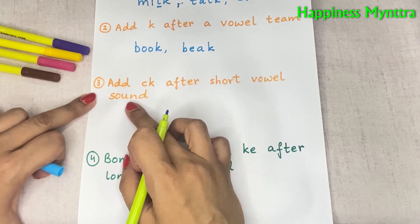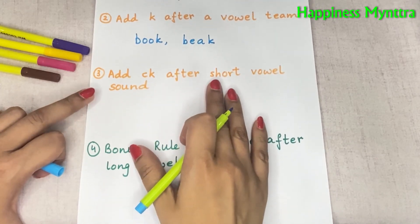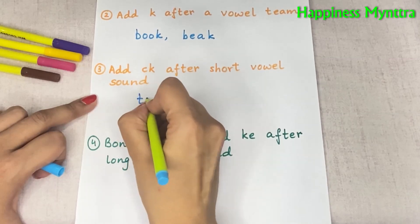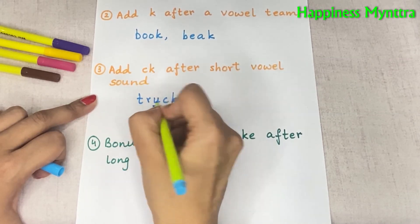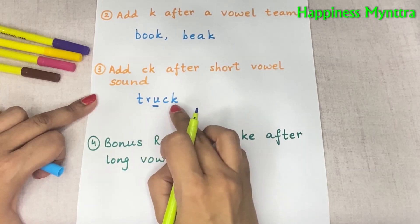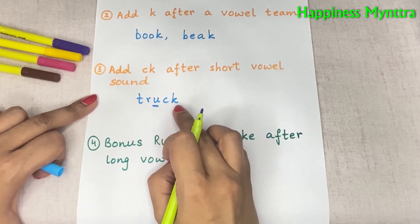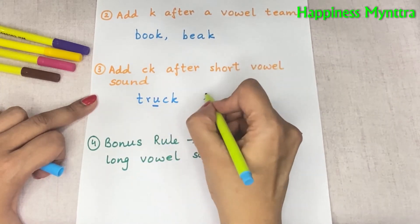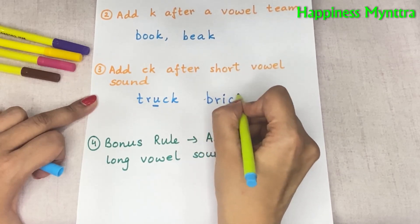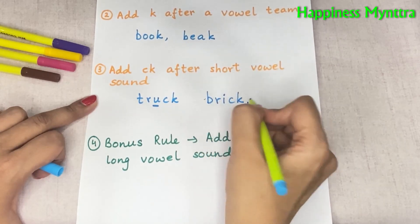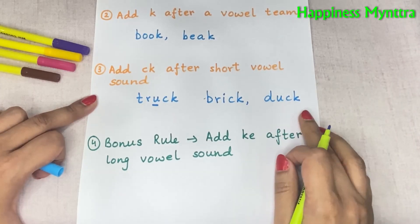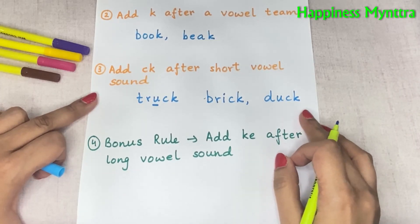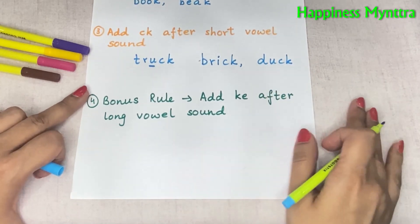Next, we'll see when to add CK. This comes after the short vowel sounds — A, E, I, O, U as short sounds. This is the 'truck' part: a short vowel and then the K sound, which means it will be CK. Other words for this could be 'brick' and 'duck', and of course many more words.